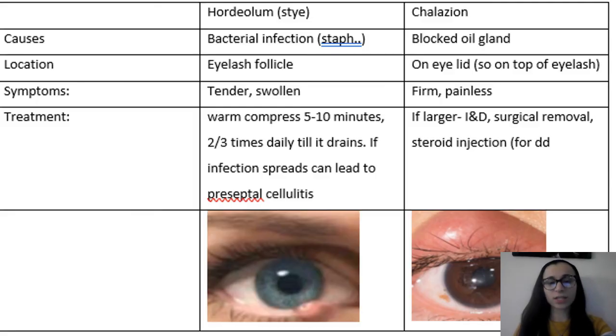Here are two conditions that a lot of times look the same. So I put them side by side so you could see it. Hordeolum is a stye. We all know what a stye is. It's basically a bacterial infection, usually staph. It's right by the eyelashes, by the follicles. It's going to be tender, swollen. Treatment for that is warm compress around five to ten minutes, two to three times daily until it drains. If the infection spreads, it could lead to preseptal cellulitis, which we already discussed.